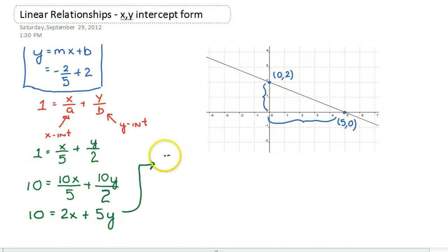Now I'm going to get 5y by itself on one side. So 5y is equal to negative 2x plus 10. And now I will divide both sides by 5. So I'll get y is equal to negative 2x over 5 plus 10 divided by 5 is 2.